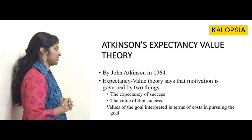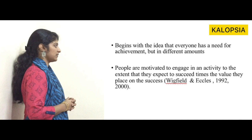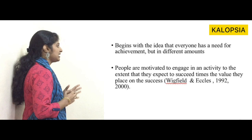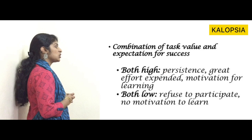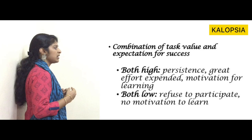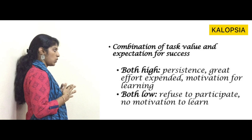Values of the goal are interpreted in terms of cost in pursuing the goal. The theory begins with the idea that everyone has a need for achievement, but in different amounts. People are motivated to engage in an activity to the extent that they expect to succeed multiplied by the value they place on success. When both task value and expectation of success are high, persistence, effort, and motivation for learning will be high; when both are low, there is refusal to participate and no motivation to learn.